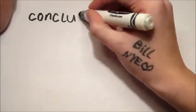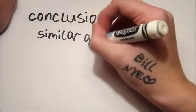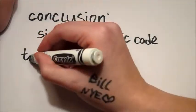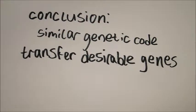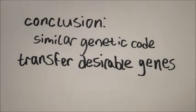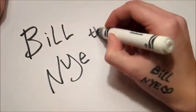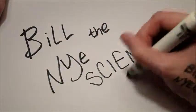And farmers can avoid those harmful chemicals. So in conclusion, all organisms have similar genetic code, and when we transfer desirable genes from one organism to another, we can create new organisms that we like better than the old ones. I'm Bill Nye, the Science Guy, and that's my spiel on GMOs.